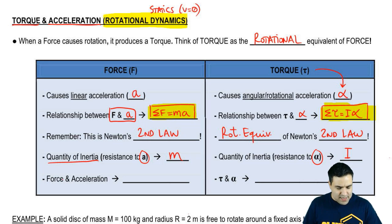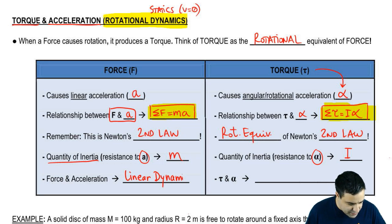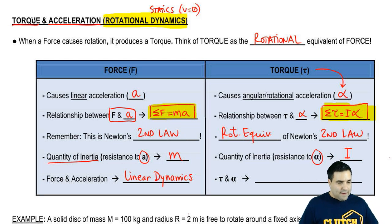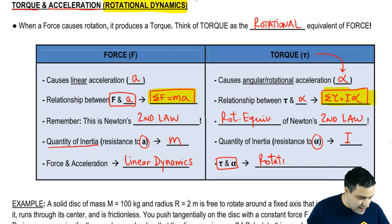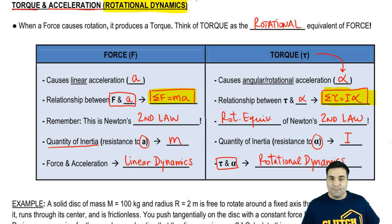And the last point is that when you have force and acceleration, you have this branch of physics called linear dynamics, which in the past we may have called it just dynamics because there's only one type. But if you have torque and alpha instead, you have what's called rotational dynamics. That's just the name. It doesn't really matter. But in case you hear these words, you know what's up.